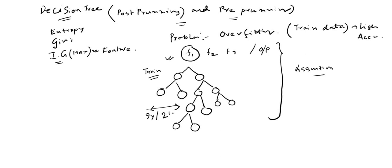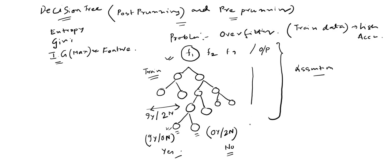Let's consider here we have 9Y and 2N, and in the last one probably we have 9Y and 0N, and in this one we have 0Y and 2N. These are actually pure splits where we take a decision: if you are coming to this branch, it means yes, and if you are coming to the other branch in a classification problem, it means no.